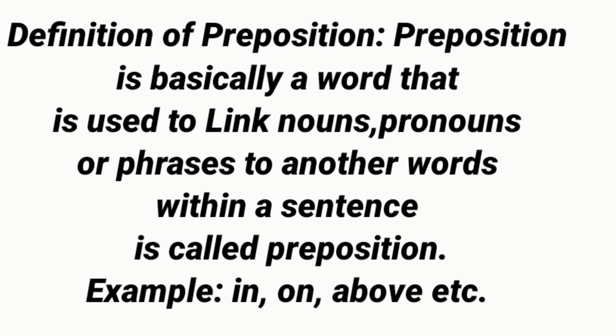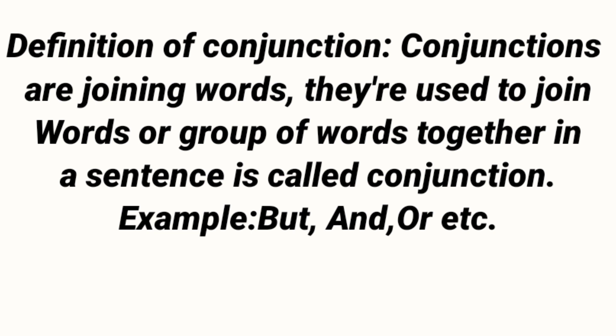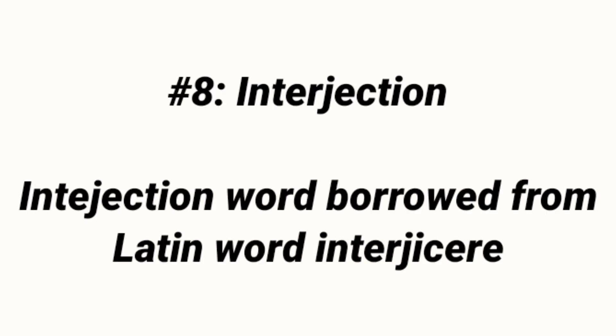Number seven: Conjunction. Conjunction word is derived from the Latin word 'conjunctio'. Definition of conjunction: Conjunctions are joining words that are used to join words or group of words together in a sentence is called conjunction. Conjunction woh lafz hai jo words ya phrases ko ek saath jodne ka kaam karta hai. Examples: but, and, or, etc.